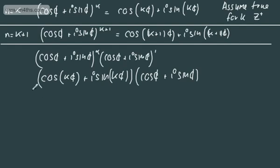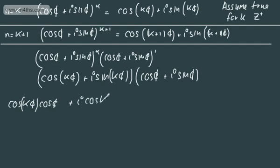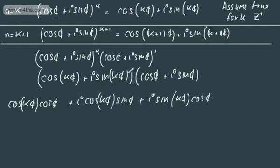So what we're going to do is actually expand this out. Expanding, we get: cos kθ multiplied by cos θ — that's the first multiplied by the first — then plus i cos kθ sin θ, then plus i sin kθ cos θ, and finally i sin kθ multiplied by i sin θ. Remember, i times i is i squared, and i squared is negative 1, so this last term becomes negative sin kθ sin θ.